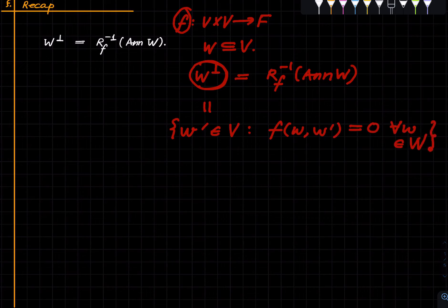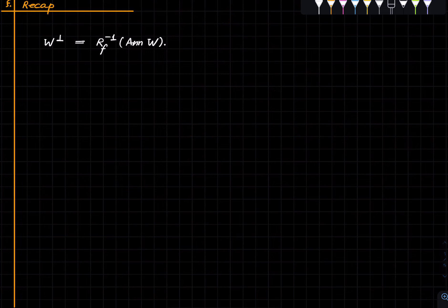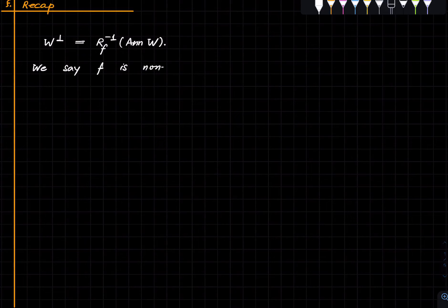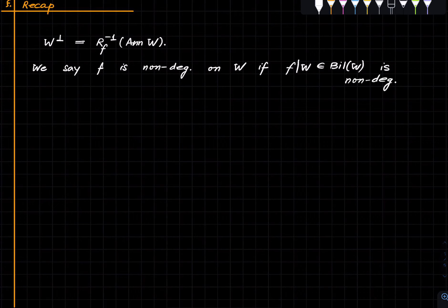I hope you remember all these definitions. One more thing: we say F is non-degenerate on W if the restricted bilinear form is a non-degenerate bilinear form. That's another piece of definition that we saw last time.